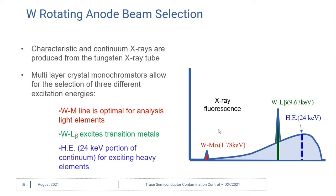The first is the tungsten M line for sodium, magnesium, and aluminum. The second is the tungsten L beta line, which excites transition metals. We also have a high energy source at 24 keV from the continuum, and this is for exciting the heavier elements.